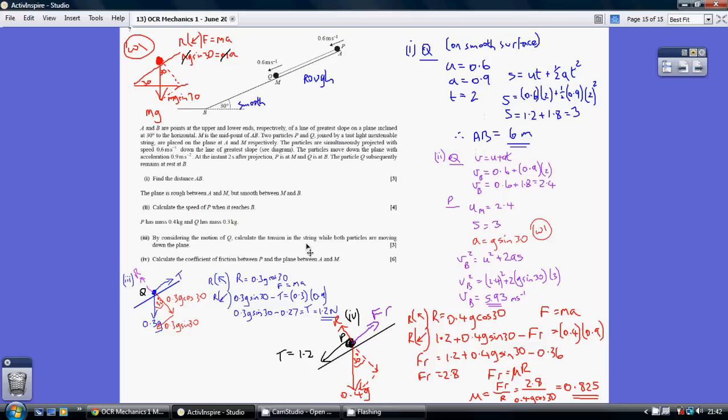For part 2 we're being asked to calculate the speed of p when it reaches b. Let's break this down into two bits. The speed of p when it gets to b is going to require me looking at the journey p takes for the second half of the journey from here to here.